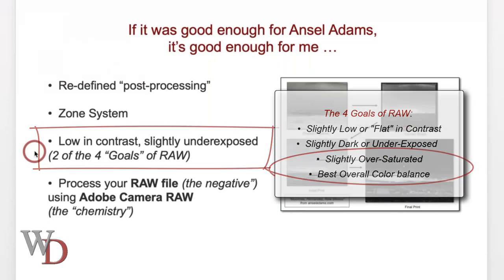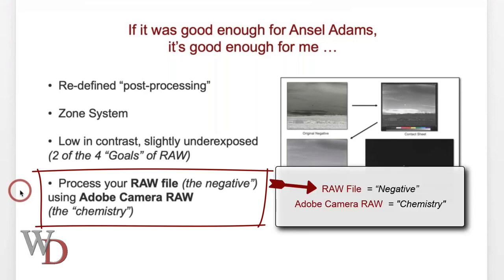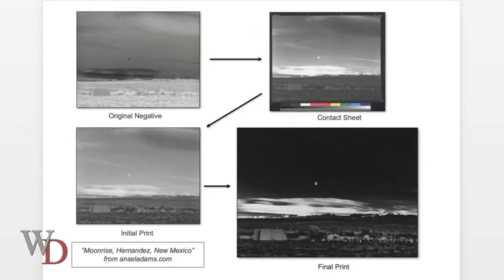The other two goals — saturation and overall color balance — are exclusive to color images. You can think of adjusting your RAW file in the same way: instead of using a negative and chemistry like Adams and Archer did, we're processing our RAW file. Think of the RAW file as the negative and Adobe Camera Raw as the chemistry.